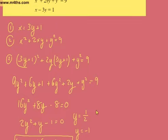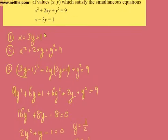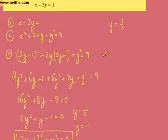Now that we've got the y values, we can put them straight back through the linear — don't feed it back through the messy non-linear. So if y is equal to 1 half, put it back in: x minus 3 halves is equal to 1. So x is going to equal 5 over 2, or 2 and a half.